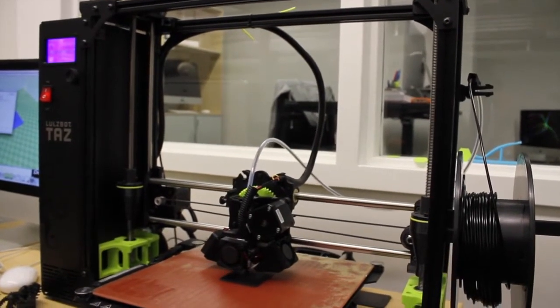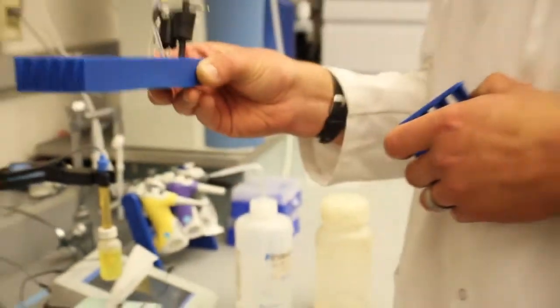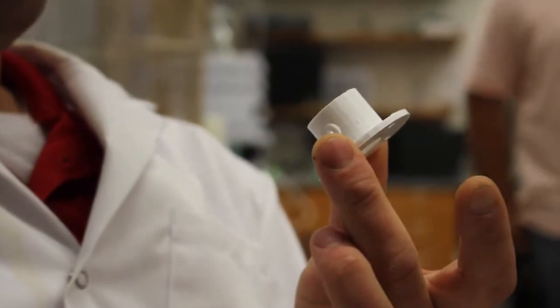Some of the simplest uses we've found for it is it makes really good test tube racks or bio holders or lens mounts. Very simple things that add up to being a lot of money. Each one of those racks would be $70 to buy.